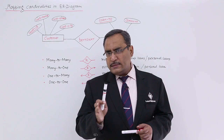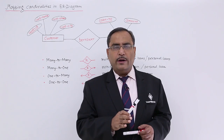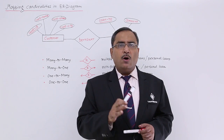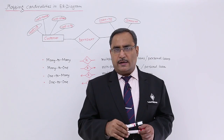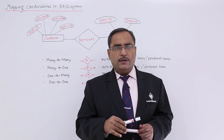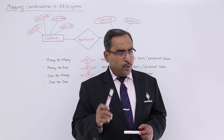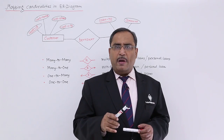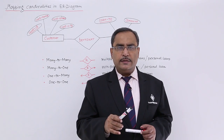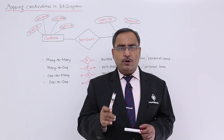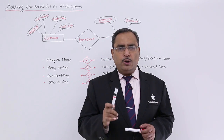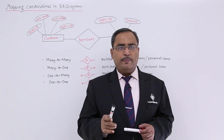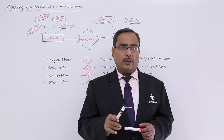We have a separate video where we discussed what mapping cardinalities are. There are four different types of mapping cardinalities: many-to-many, many-to-one, one-to-many, and one-to-one.